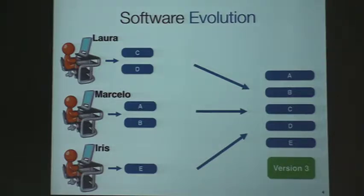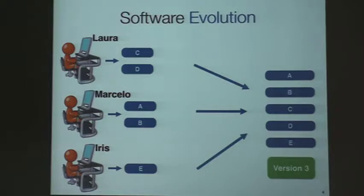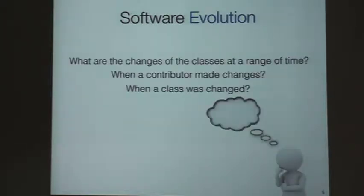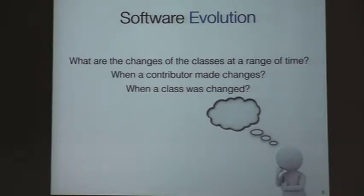What I want to show here is that as time passes, people join together to improve software — the classes are modified and there exist versions of many projects. Some developers, some product managers ask: what are the changes of the classes at a range of time? When did a contributor make changes, and when was a class changed?